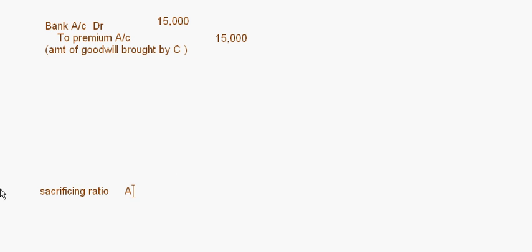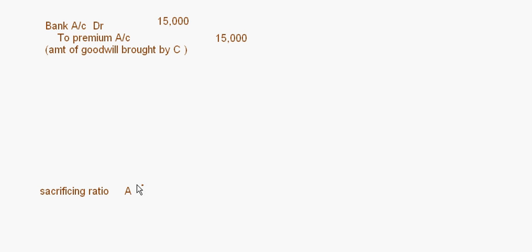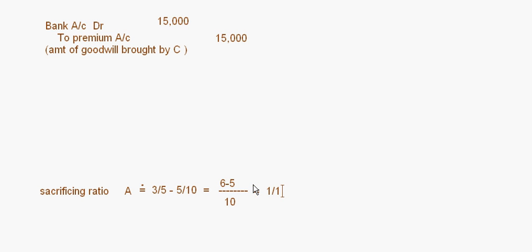The new ratio for A, B, C is given as 5 is to 3 is to 2, and the old ratio is 3 is to 2. For A, the sacrificing ratio is: 3/5 minus 5/10. The denominator comes to 10, giving us 6 minus 5, which equals 1/10.